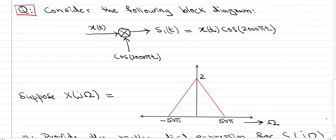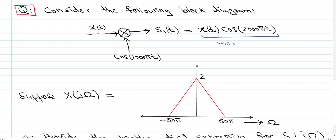Now we solve another problem which again uses the Fourier transform of cosine. It helps you find out what the modulation operation does. If you take a basic linear systems and signals class, you will have seen this — it is called modulation, where you take your signal and multiply it by a cosine or sine. The problem gives us a block diagram where x(t) is multiplied by cosine, and x(t) has a Fourier transform that is nonzero from −50π to 50π.